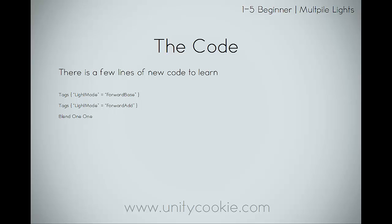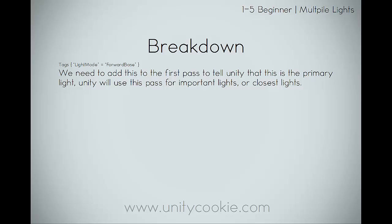There are a few lines of new code to learn. Tags: LightMode for Base and LightMode for Add — we've actually already learned this earlier on. For LightMode ForwardBase, we need to add this to the first pass in Unity to tell it that this is the primary light pass. Unity will use this pass for all important lights or the closest lights. And in the latest versions of Unity, apparently point lights are only calculated in ForwardAdd — something I'll be looking into in the future.